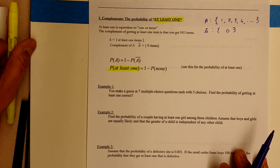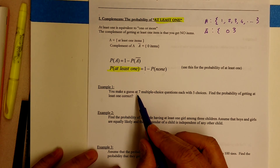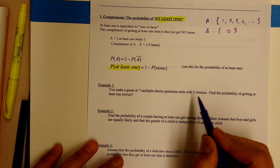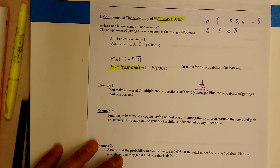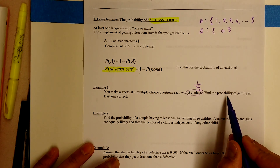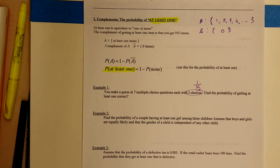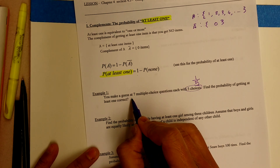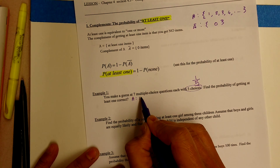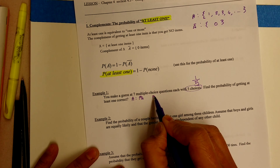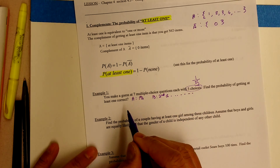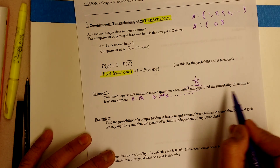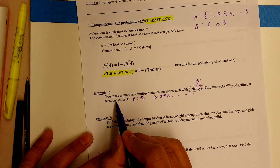Let's say that you make a guess on seven multiple choice questions, each with five choices. So the chance of getting each question right is one out of five. Find the probability of getting at least one of those questions right. We'll let A equal the first question, B equal the second question, and so on.